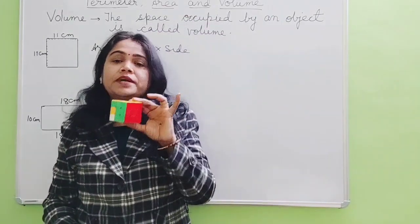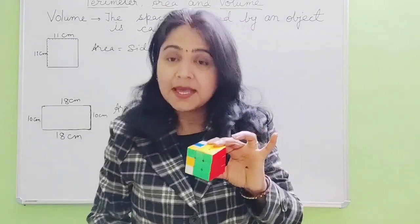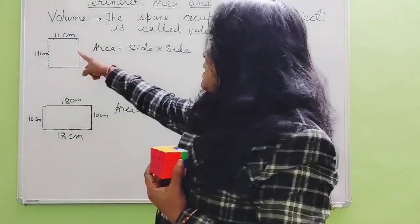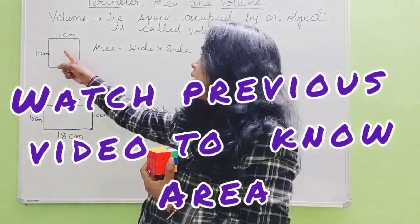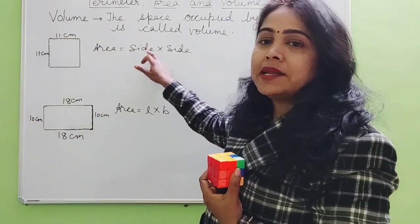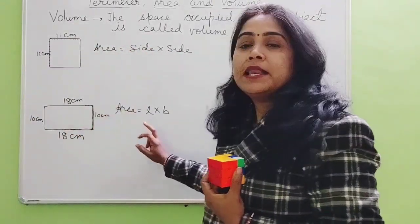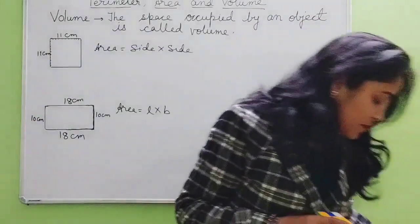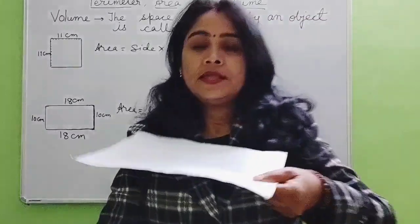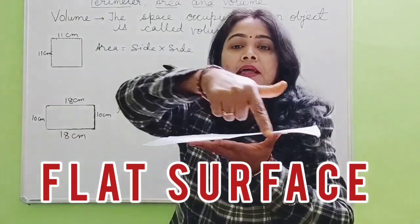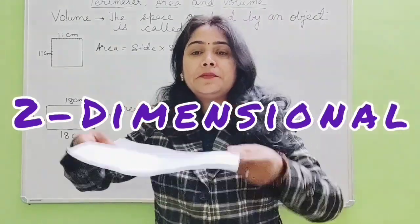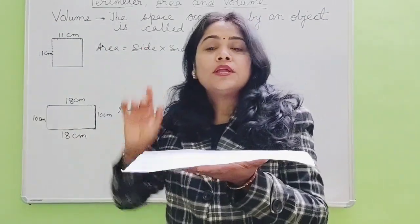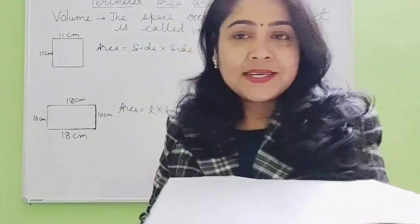Objects which have length, breadth, and height have volume. We have learnt about area — that was a plane surface. Area we find by measuring side into side for a square, and length into breadth for a rectangle. In any plane figure, like this plane paper, it is occupying some area and has only length and breadth — no height. It is a two-dimensional figure.